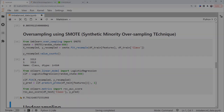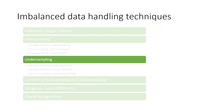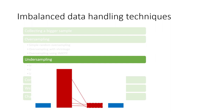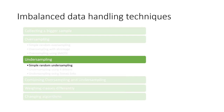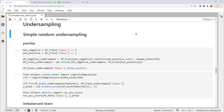We'll move on to undersampling, which downsizes the majority class to balance with the minority class. We'll cover three popular methods: simple random undersampling — the basic approach of randomly sampling from the majority class; undersampling using k-means — synthesizing based on cluster centroids; and undersampling using Tomek Links — detecting and removing samples from Tomek Links. For simple random undersampling, we take a sample from the majority class to match the size of the minority class, though this risks removing useful information.